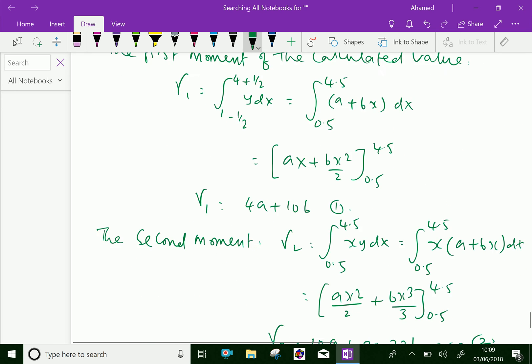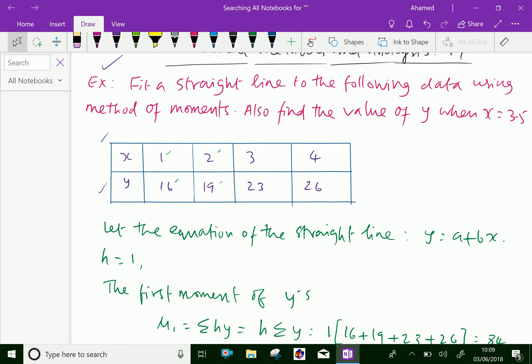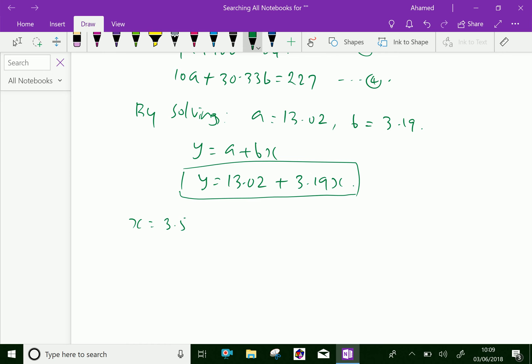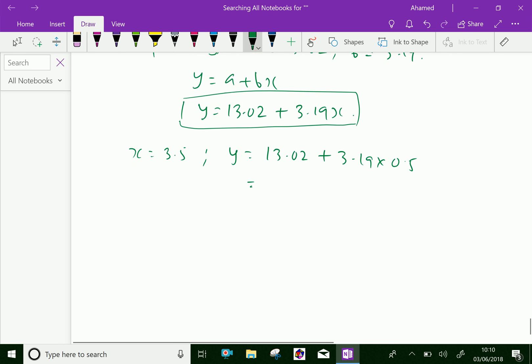Now let us find the value of y when x equal 3.5. Put x equal 3.5 in this equation. We get y equal 13.02 plus 3.19 into 3.5, which is equal 14.615. We have done. Please subscribe to the YouTube channel.